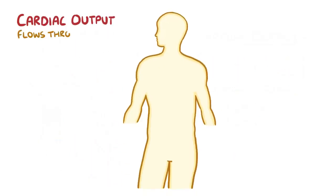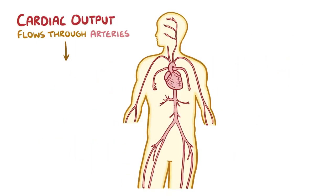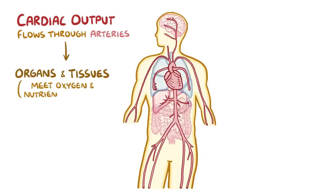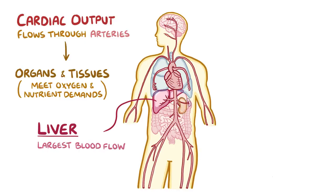The cardiac output flows through the arteries and is distributed to the various organs and tissues to meet their oxygen and nutrient demands. Of all the organs, the liver receives the largest amount of blood flow. The kidneys also get a lot of blood flow, but less than the liver.